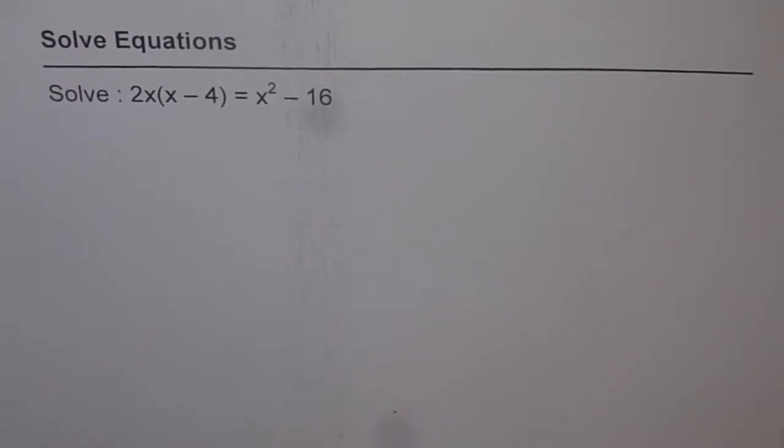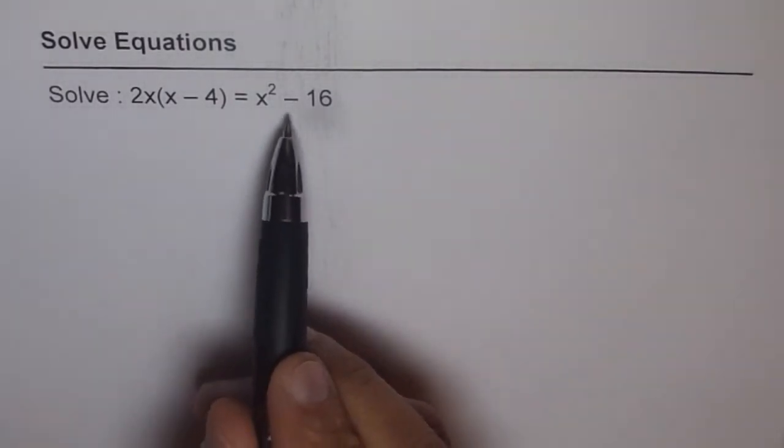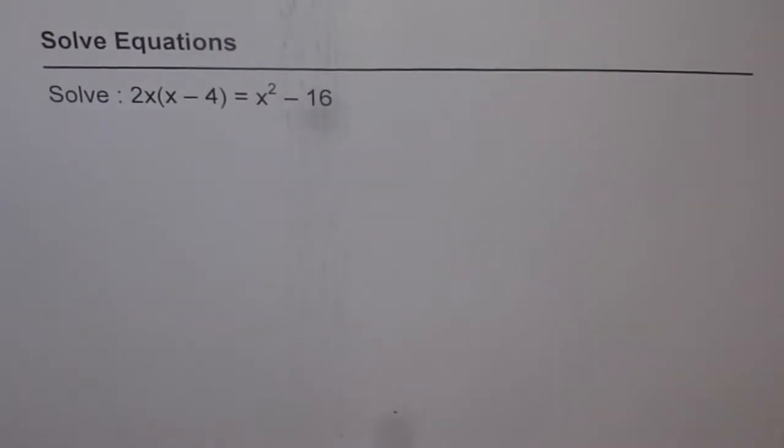Here is a test problem on solving equations. The equation is 2x times x minus 4 equals x square minus 16. I would like you to copy the equation, solve it, and then look into my suggestions.